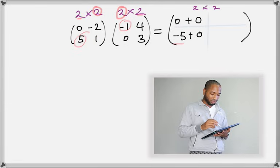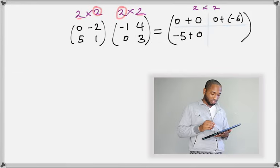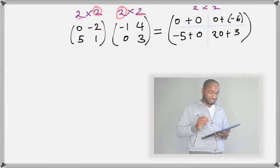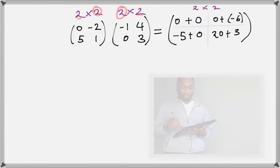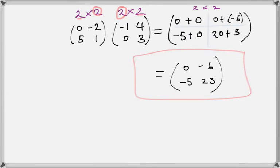Notice how it slides along. For what goes in the first row, second column, it's the first row by the second column. Zero by four is zero, negative two by three is negative six. Five by four is twenty, one by three is three. Then add up: zero plus zero is zero, negative five plus zero is negative five, zero plus negative six is negative six, and twenty plus three is twenty-three. Use your calculator if needed.